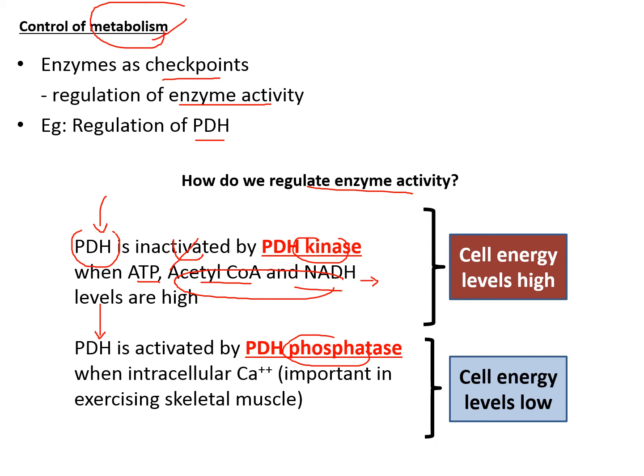On the other hand, when a cell has a low energy level — such as in skeletal muscle during active contraction — there is a high calcium level corresponding to active muscle contraction. This serves as a signal to dephosphorylate PDH, removing the phosphate group to activate the enzyme, resulting in more ATP production.